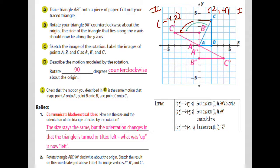Now for point B, which is at (2, 0). Applying the 90-degree counterclockwise formula (-y, x): negative y is negative zero, which is just zero, and x is 2. So B prime becomes (0, 2). Notice how the x and y values shift positions. Then you simply connect the points to draw the rotated triangle.